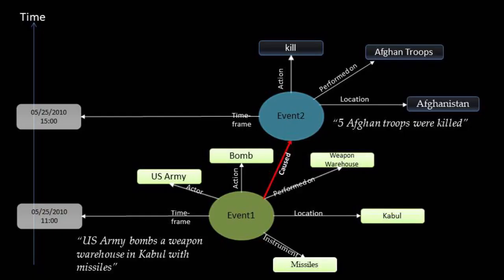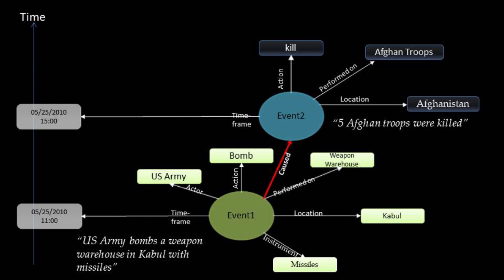The algorithm worked in the following way. It took sentences — so in this example, a real one: 'US Army bombs a weapon warehouse in Kabul with missiles.' It identifies who did the action — US Army — the action bombing, performed on a weapon warehouse in Kabul with missiles. It would then look for cues in the data: somebody said 'this causes,' 'this happens after.' In this case, this caused five Afghan troops to be killed. Behind the scenes, we created a causality graph of 300 million nodes and billions of edges representing what humanity knows in the last 150 years about causality.